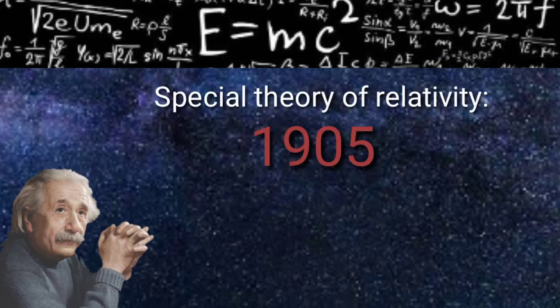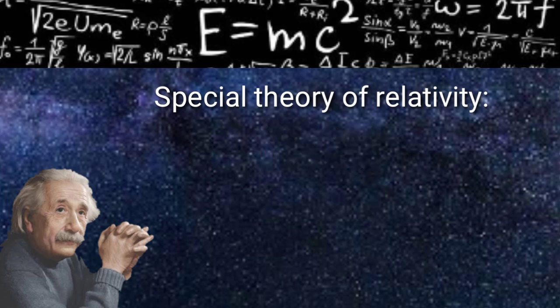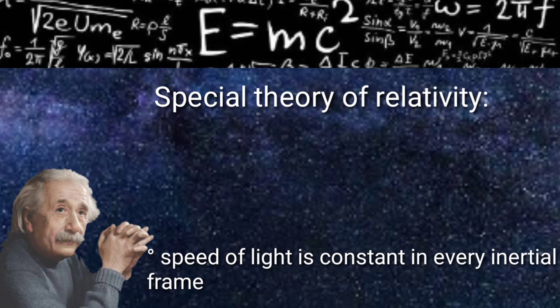In 1905, great physicist Albert Einstein proposed the special theory of relativity. The theory had some really bold and fundamental postulates. And one of them was that the speed of light is constant in every inertial frame.